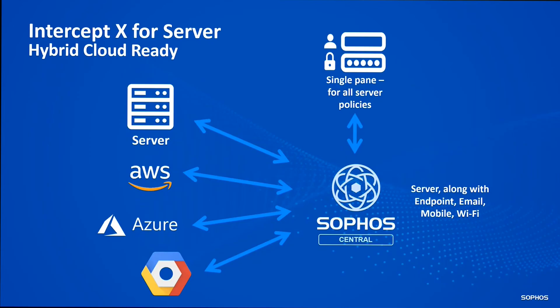On the server side: Intercept X Advanced for server, XDR for server, and MTR for server are all hybrid cloud ready. Regardless of where your server is — AWS, Azure, Google public cloud, or on-premises — the same server license can be used as bring-your-own-license in the public cloud, same order, same procurement, same deployment method. In Sophos Central it will show a breakdown of which servers are where.